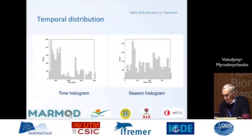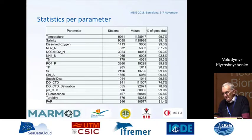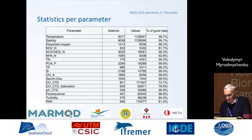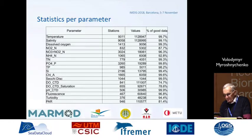The seasonal histogram shows that data are distributed throughout the year more or less evenly. This table shows statistics per parameter — 18 parameters in total. The most measurements were done for temperature and salinity, followed by nitrates, phosphates, and other nutrients, then oxygen, and some other CTD parameters.